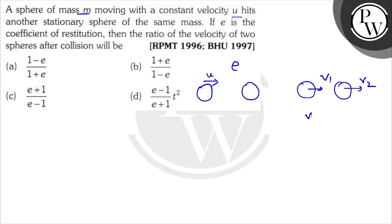So v2 minus v1 upon u is equal to e, and u is equal to mv1 plus mv2.